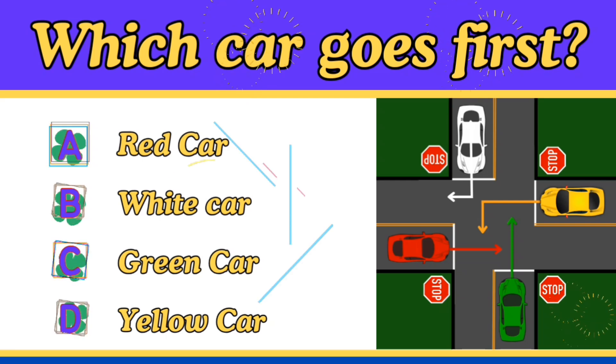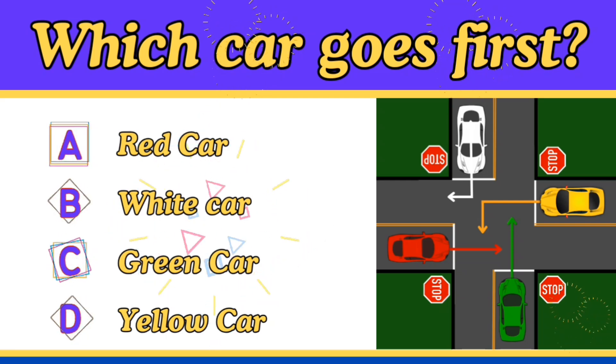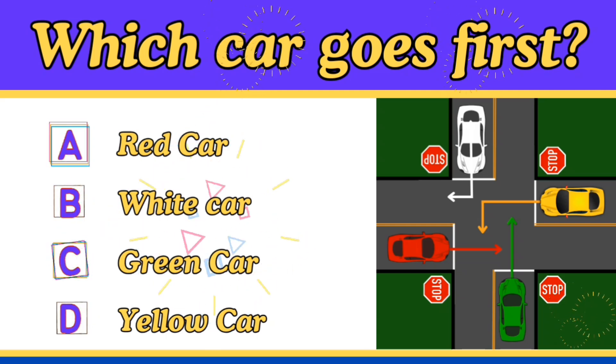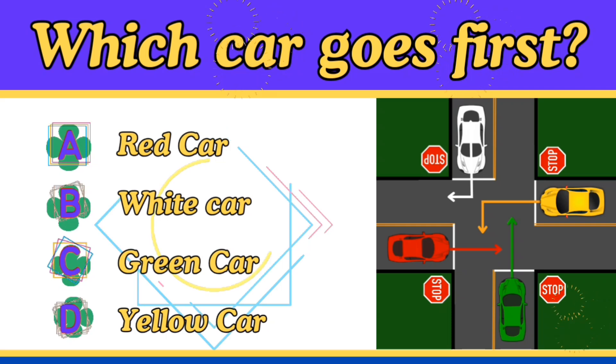So the correct sequence of these cars will be as follows. The white car goes first, followed by the red car, which goes second. Then the yellow car goes third, and finally, it's the green car that is the last to go.